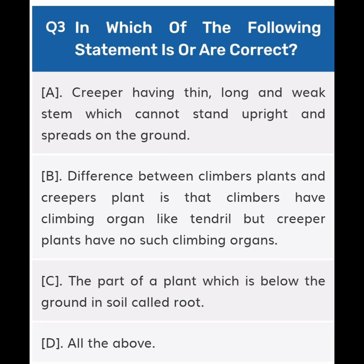Next, question number three: Which of the following statements is or are correct? Option A: Creeper has a thin, long and weak stem which cannot stand upright and spreads on the ground. Option B: The difference between climber plants and creeper plants is that climbers have a climbing organ like tendrils, but creeper plants have no such climbing organs. Option C: The part of a plant which is below the ground in soil is called root.